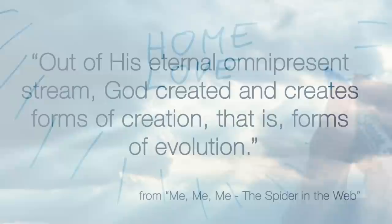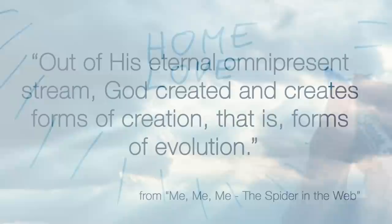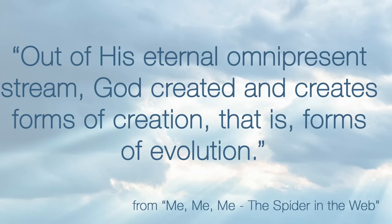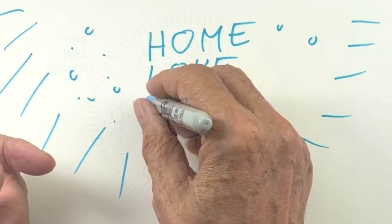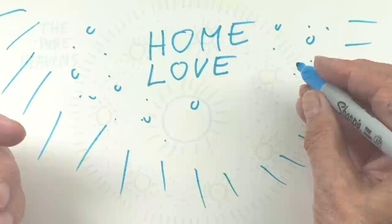Out of His eternal, omnipresent stream God created and creates forms of creation, that is, forms of evolution. Seven unimaginably immense ethereal universes with their suns, planets, worlds, nature kingdoms and fully evolved spirit beings, also called the sons and daughters of God.